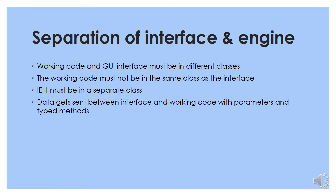The separation of the interface and engine — and there are marks for this in the exam. This is when the working code, where you get data from a database or text file, do calculations, and manipulate the data, is separated from the GUI interface, which is what is displayed on the screen and allows the user to do input. These two parts of the code must be in different classes. Data gets sent between the interface class and the working code class or classes using parameters and typed methods.